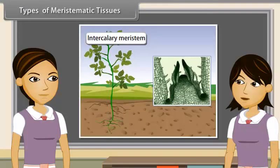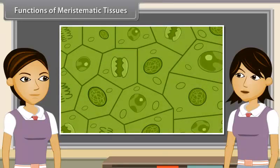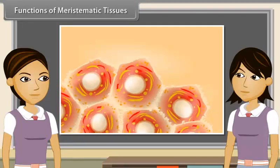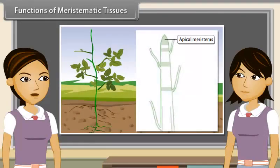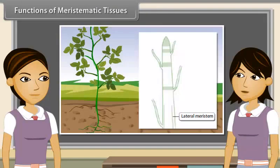Depending on the region where they are present, meristematic tissues are classified as apical, lateral and intercalary. The tissues present in the growing tips of stems and roots are known as apical meristem. The tissues present on the lateral side of roots and stems are lateral meristem. The tissues which lie at the base of internodes of the stem are called intercalary meristem.